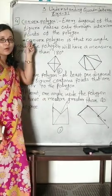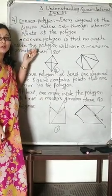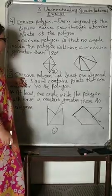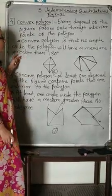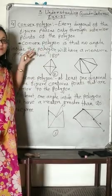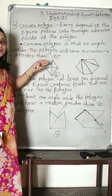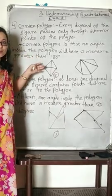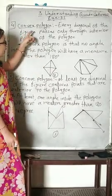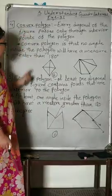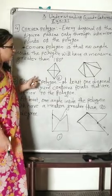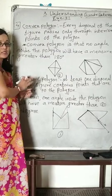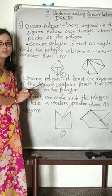So to summarize: we started with simple curve, then simple closed curve, then polygon, then convex polygon, and then concave polygon. Polygon means at least three straight sides should be there, and angles should be there. We saw examples of polygon, convex polygon, and concave polygon. Like this way, Exercise 3.1 question number one is over. We will take the second question next.